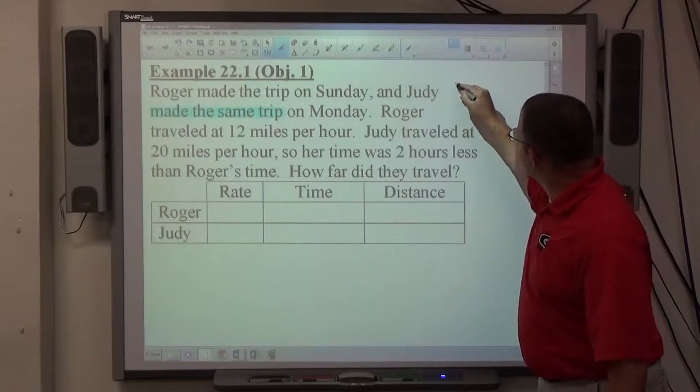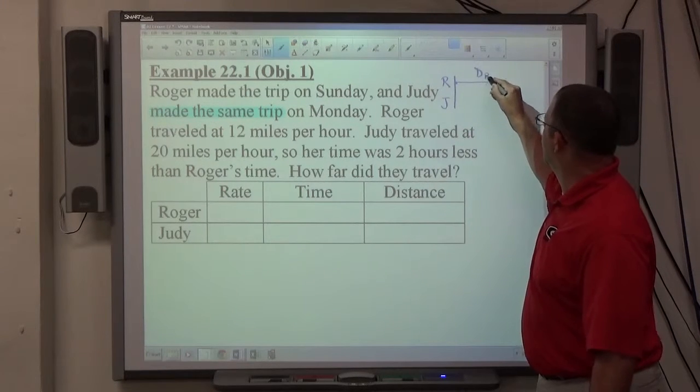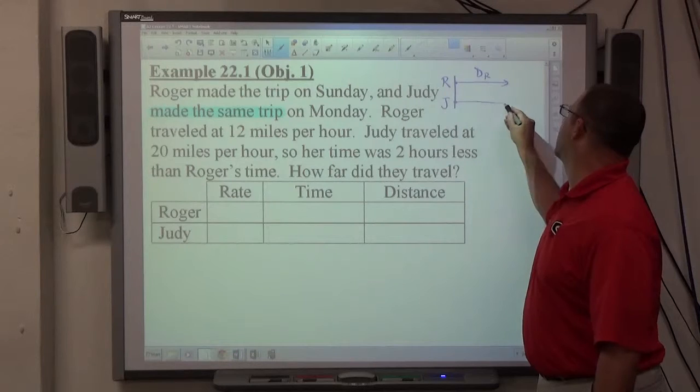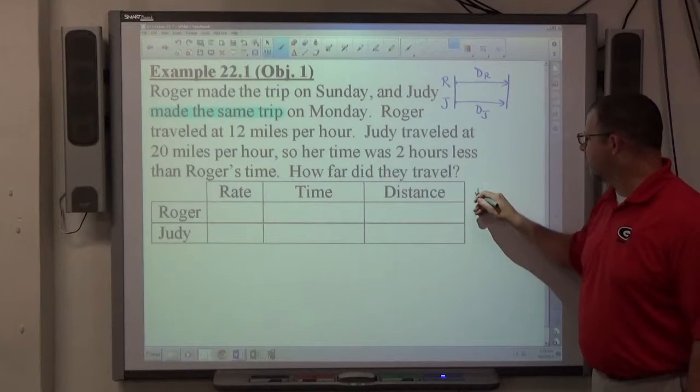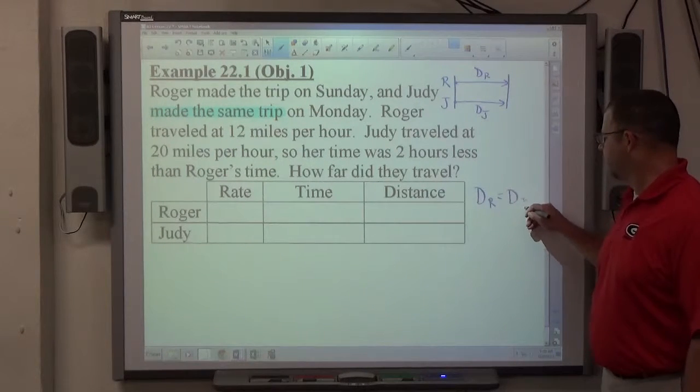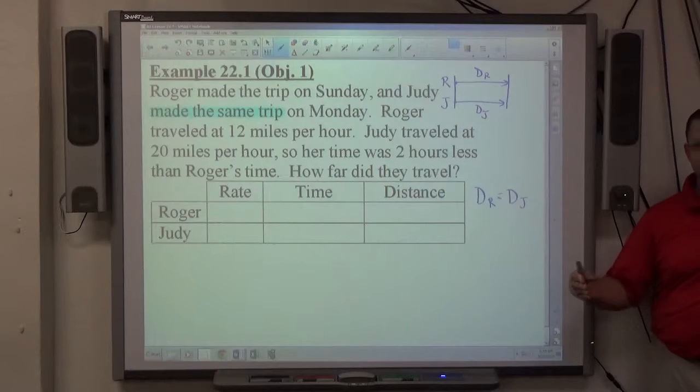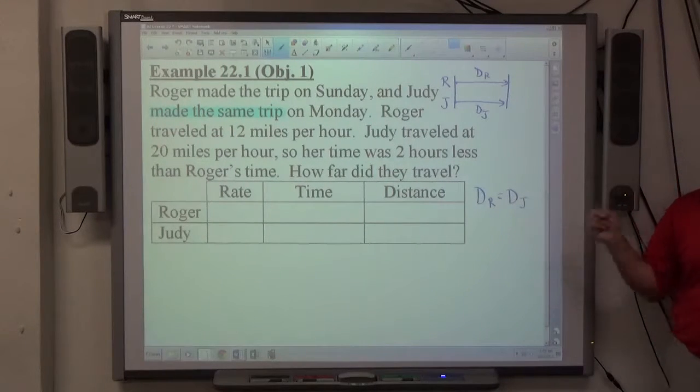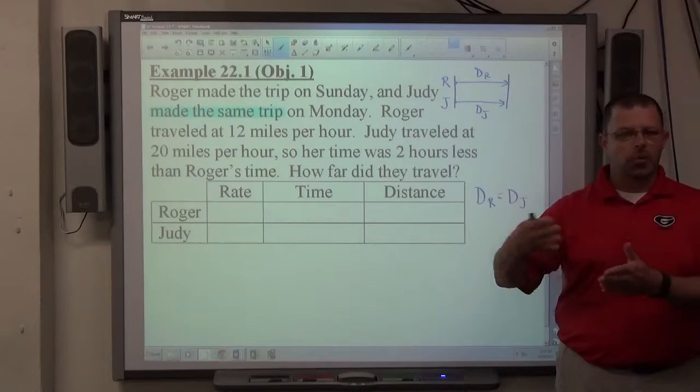And what I can see here is that I've got Roger and I've got Judy, and Roger's making some trip of some unknown length. And Judy's making a trip of also an unknown length, but I do know about the lengths that the lengths are equal to each other. So the first thing I can see about this is that Roger's distance is equal to Judy's distance. That's always priority one on a uniform motion problem. Identify how the distances relate to each other. For the next couple lessons before we deal with the new aspect of this, they're all going to be equal to each other.